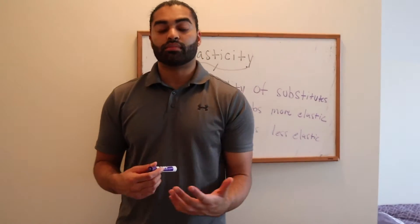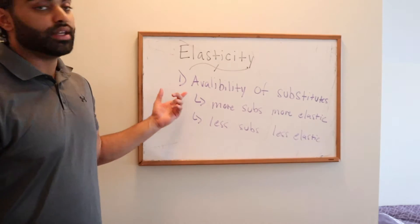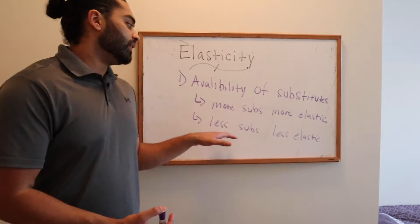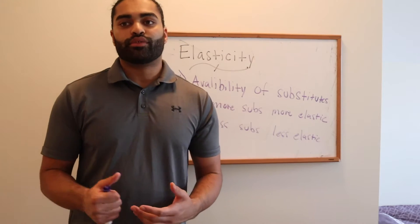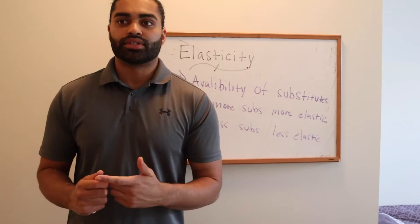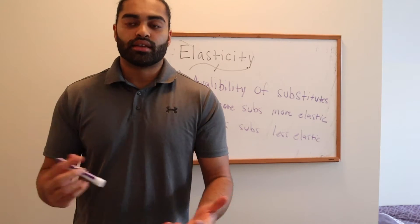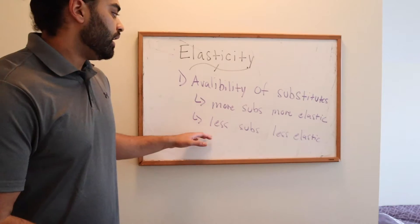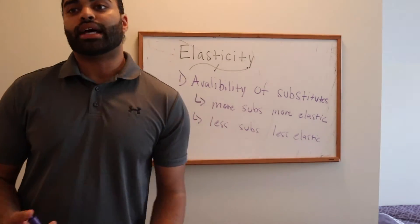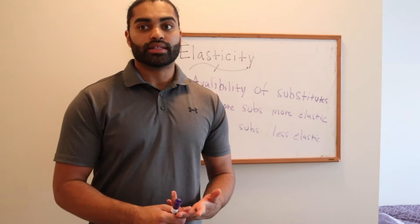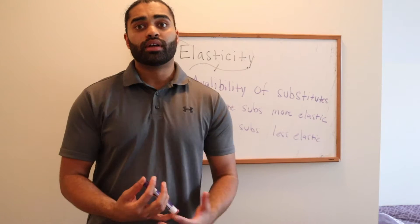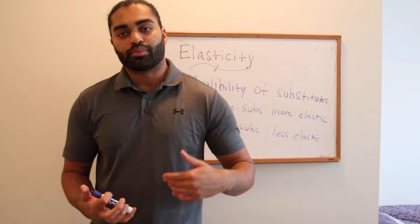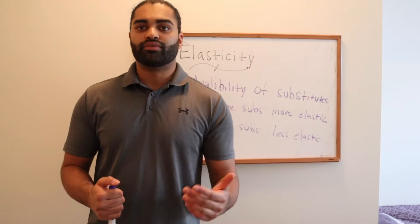Now we're going to go over the different determinants of elasticity. The first determinant is availability of substitutes. The more substitutes that are available, the more elastic it will be. The fewer substitutes available, the less elastic — or inelastic — it will be. Goods with many substitutes include canned vegetables, breakfast cereals, and products with multiple brands — these are more elastic. Goods with fewer substitutes, such as Broadway theater tickets, rare coins, autographs, electricity, or Super Bowl tickets, are much more inelastic. If the price increases, you'll see a small drop-off but individuals will still consume the product.